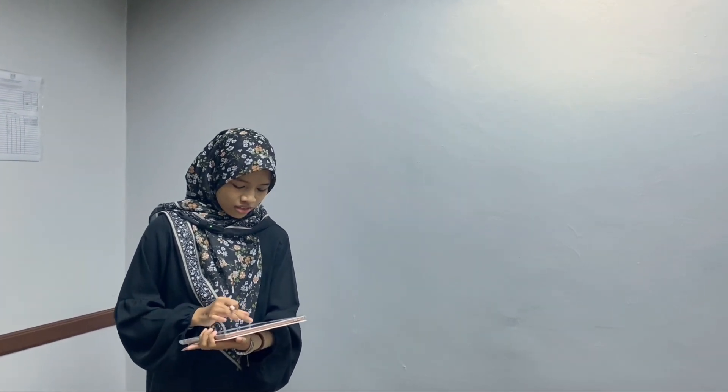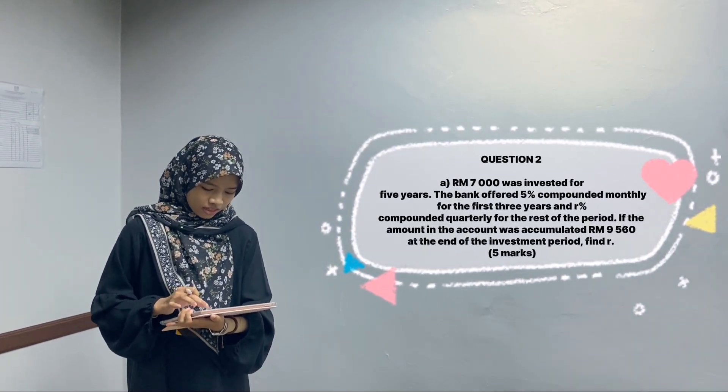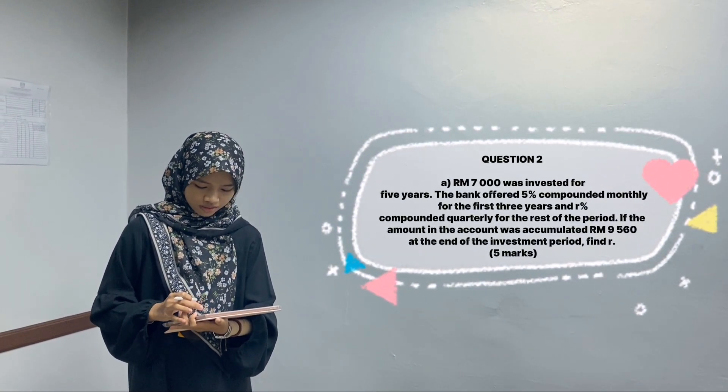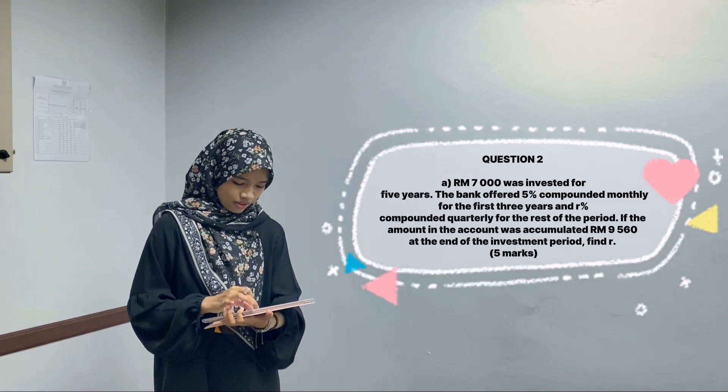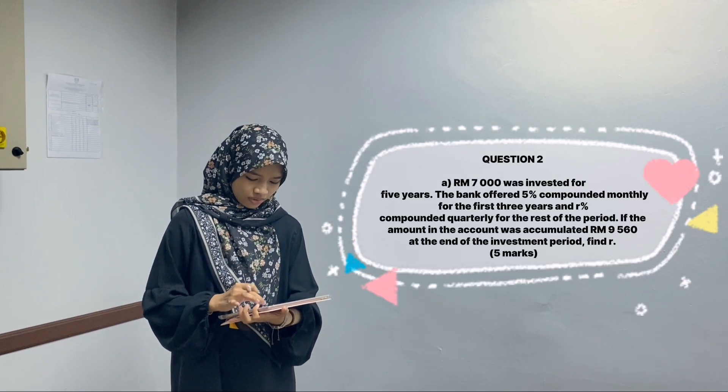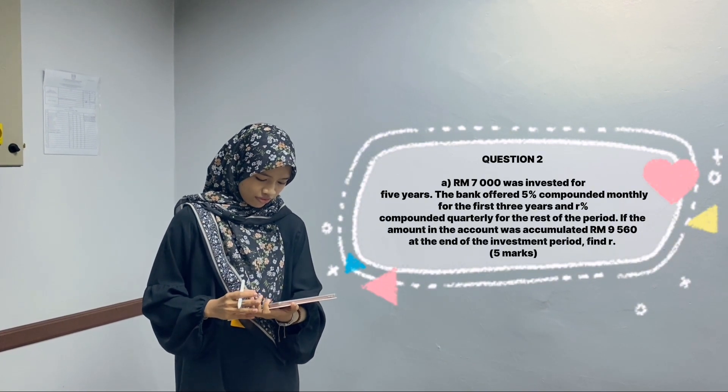Let's proceed to the next question part A. Let's read the question first. If $7,000 was invested for 5 years, the bank offers 5% compounded monthly for the first 3 years and R% compounded quarterly for the rest of the period. If the amount in the account was accumulated $9,516 at the end of the investment period, find R.